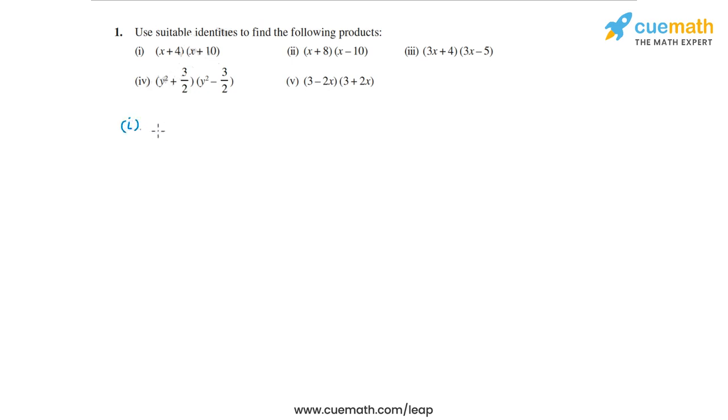The first product is (x+4)(x+10). This is of the form (x+a)(x+b). So we will use the identity for (x+a)(x+b), which is x² + (a+b)x + ab.